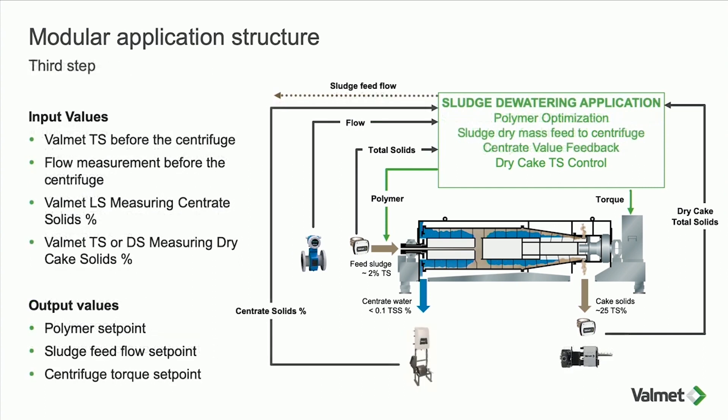With the full system — all measurements covering inlet, dry cake, centrate, and flow — we can control everything: mass flow to the centrifuge, polymer dosing into the sludge flow, and torque, all using the multi-variable controller. The goal is that 24/7 you are optimizing: keeping polymer to a minimum, keeping centrate to a minimum, and keeping dry cake solids as high as possible or within a certain process window.